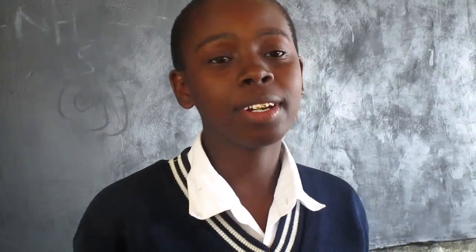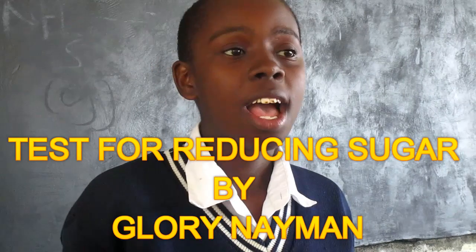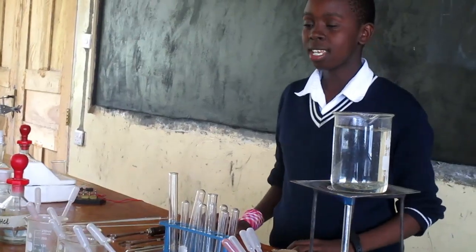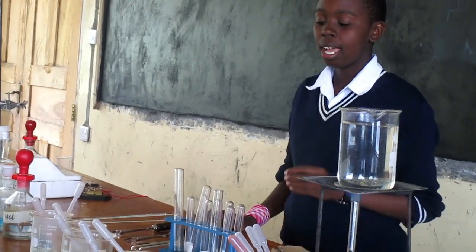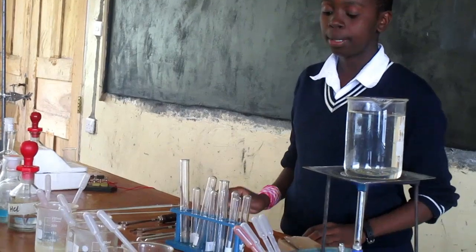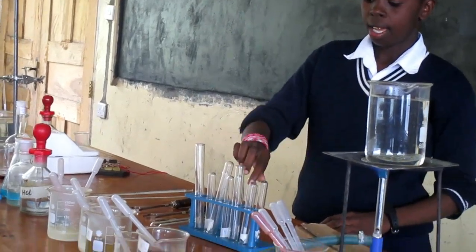My name is Glory Naiman. I am a form 2 student in Kissimilu Secondary School. Today we are going to do the test for carbohydrates — specifically reducing sugar. Under carbohydrates we have reducing sugar, and I am going to test for its presence. The following are the procedures we will take.